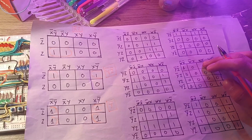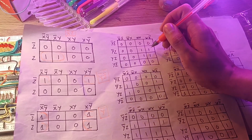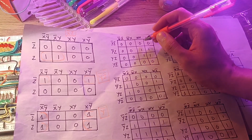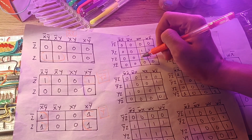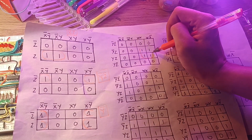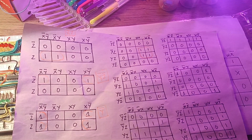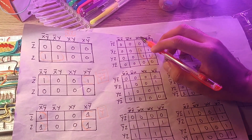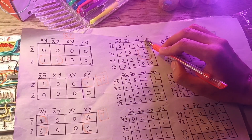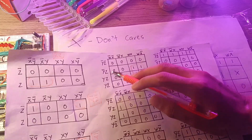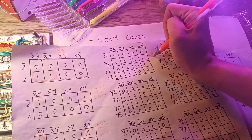In the next example, we have ones in four positions. To group them efficiently we group all four together, then find the similar variables in both column and row, which are w and z. So the answer for this one is wz.